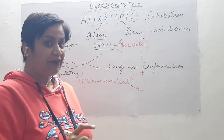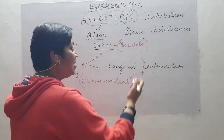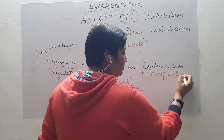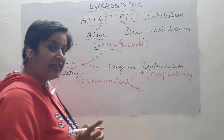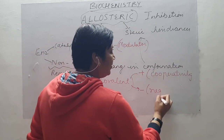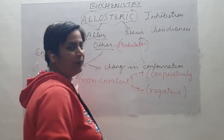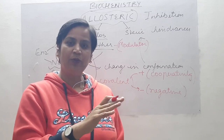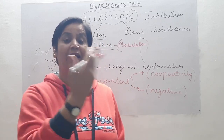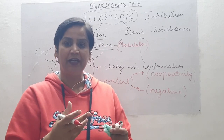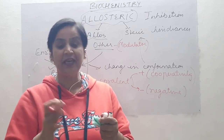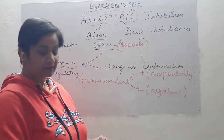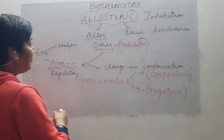Whether the modulator is increasing or decreasing enzyme activity depends on cooperativity. If it is helping the enzyme in its action, it is positive cooperativity; if it is inhibiting, it is negative cooperativity. For example, binding of oxygen to heme — one molecule binding compels another molecule to bind — that is positive cooperativity. One molecule binding helps other molecules bind.